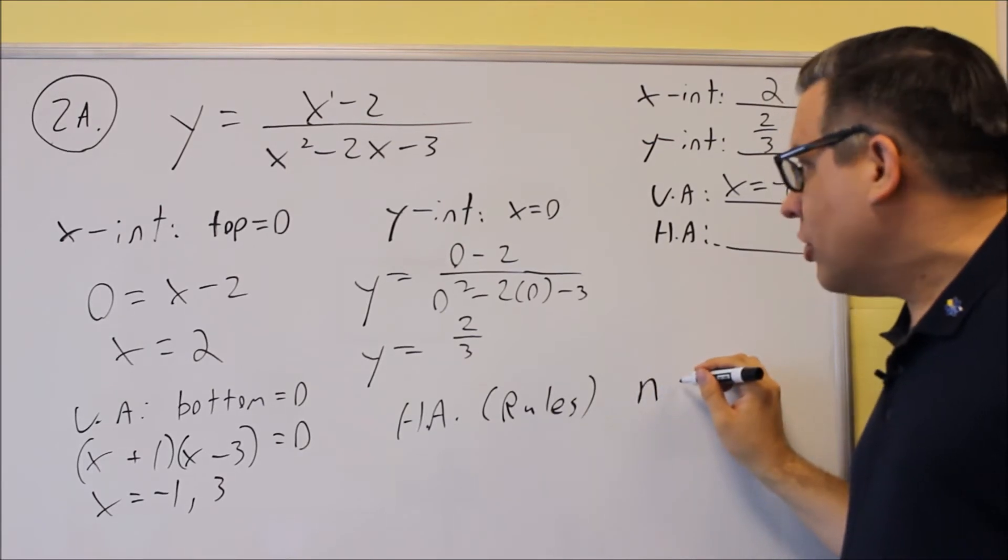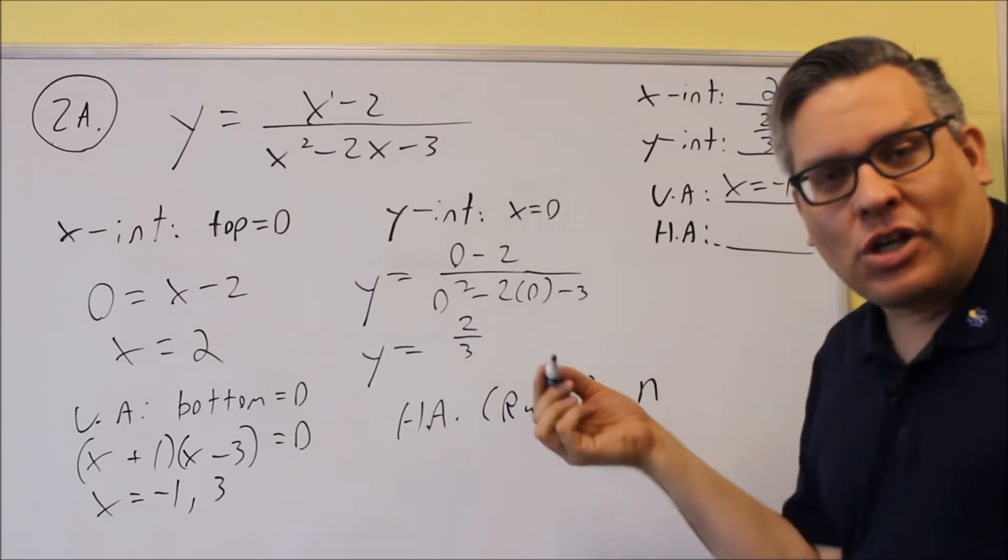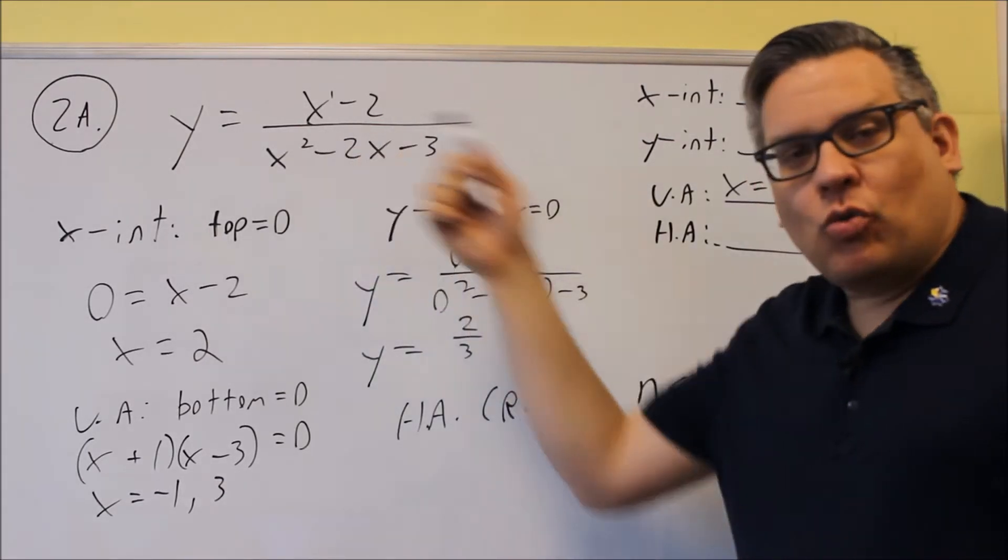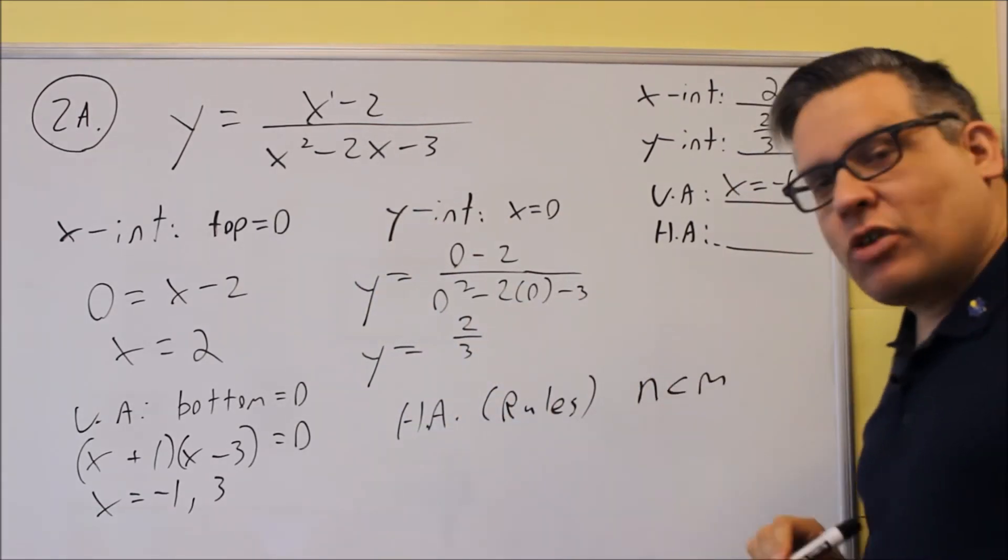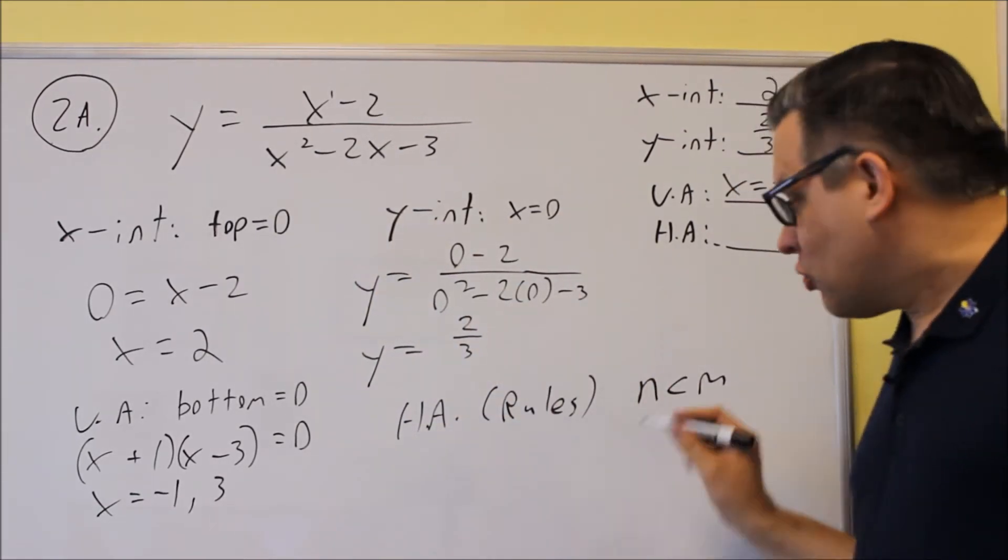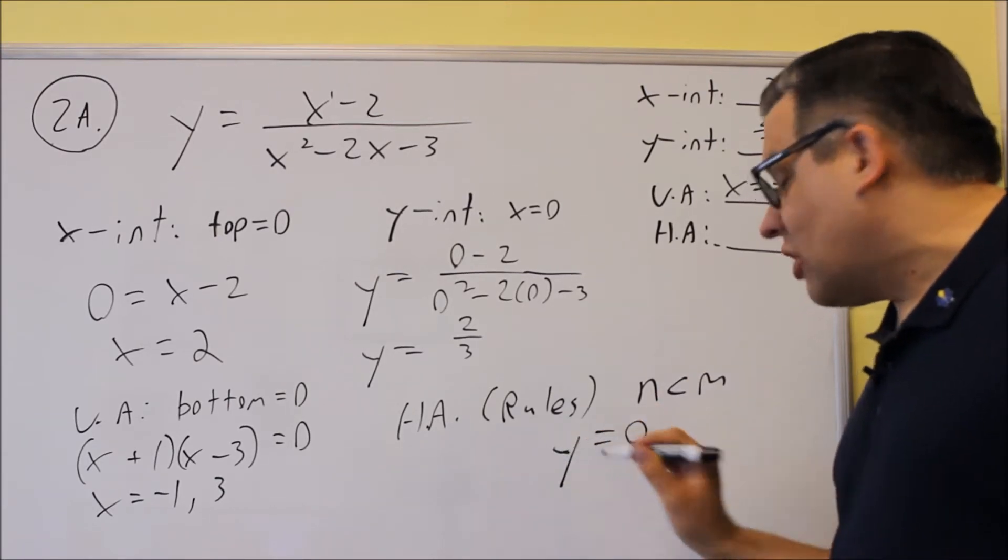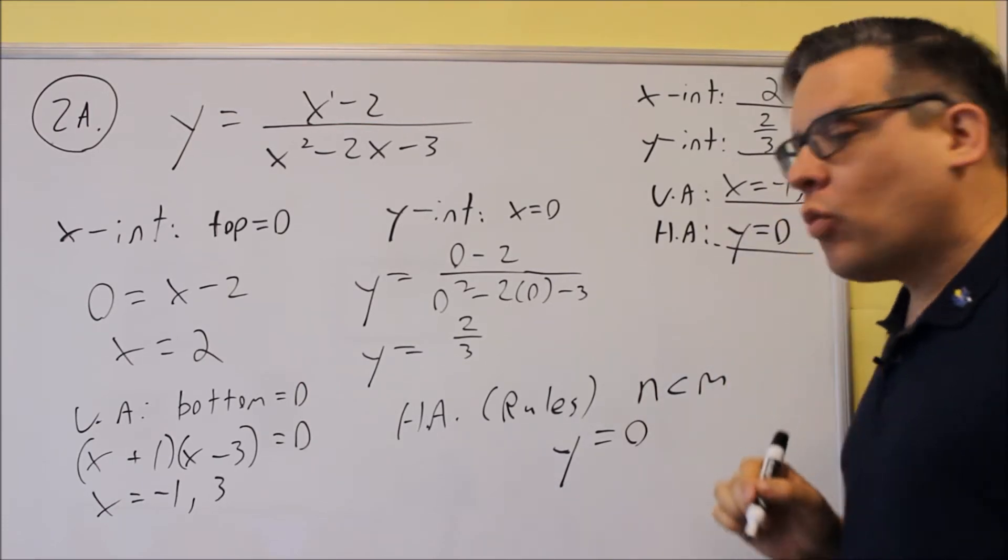So the rule that we're using is the n would represent the highest power or the degree on top that is less than m, which is the degree or the highest power you have on the bottom. Whenever you have this situation set up, automatically your horizontal asymptote is y equals zero. So we're going to put that in right here, y equals zero.